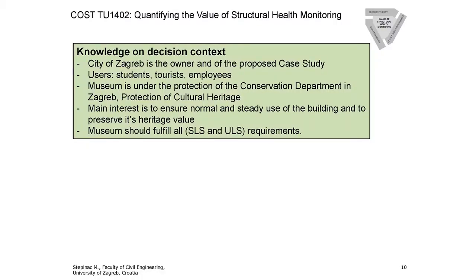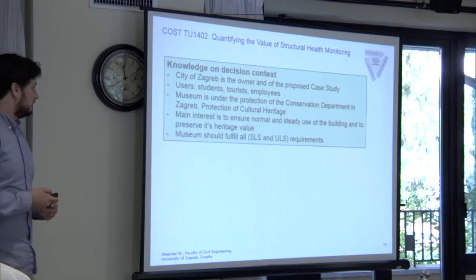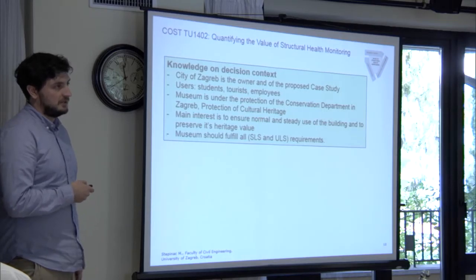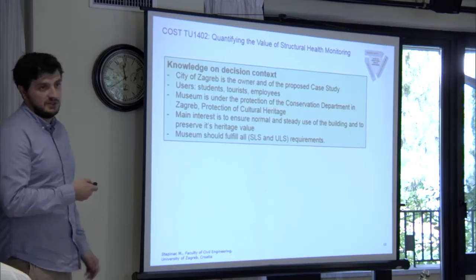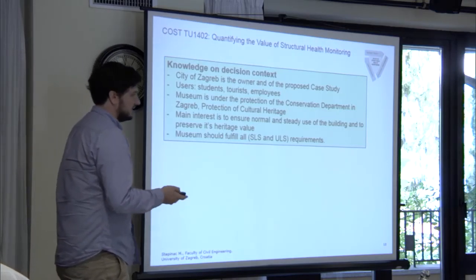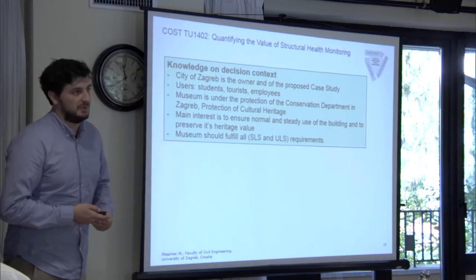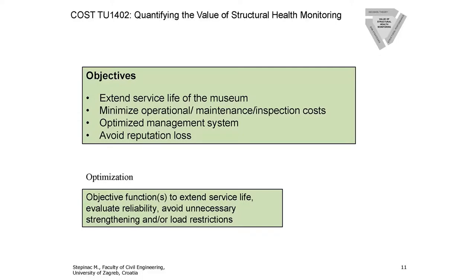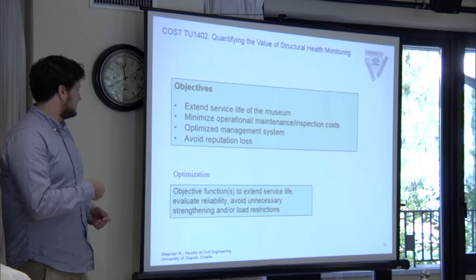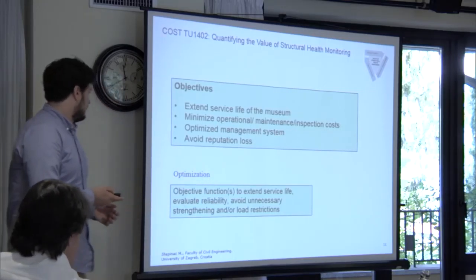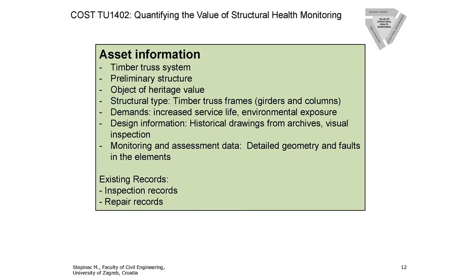The owner is the City of Zagreb and the users are tourists, students, and citizens. What is really important is that this museum is under protection as cultural heritage in timber. Assessing a cultural heritage building is not the same as assessing ordinary buildings. The main objectives are to extend the service life — it's now 70 years old but was designed for one year — and to minimize operational, maintenance, and inspection costs, optimize the management system, and avoid reputation loss.